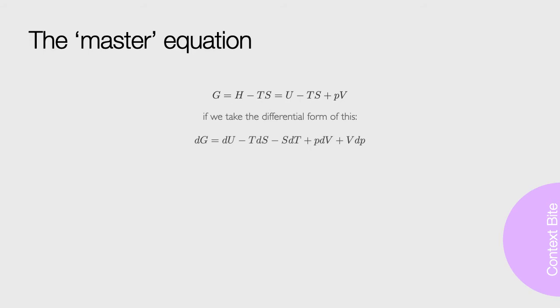Now, we can take the differential form of this equation. For each multiplicative term, we need to have two different terms when taking the differential form, so for TS, we end up with TdS and SdT.